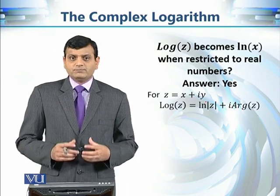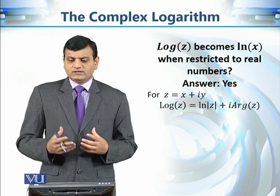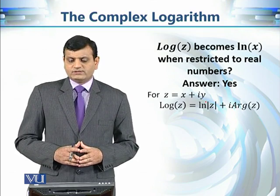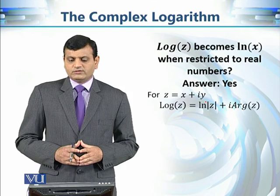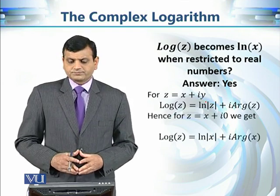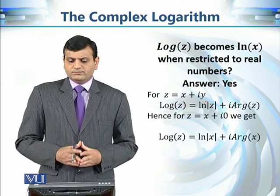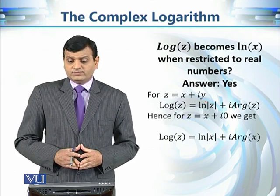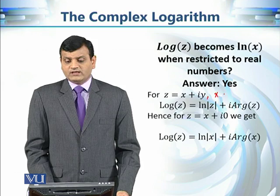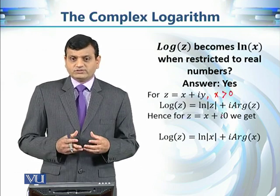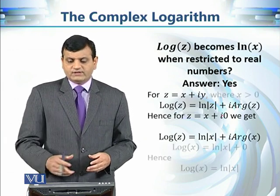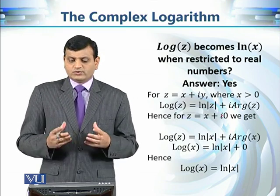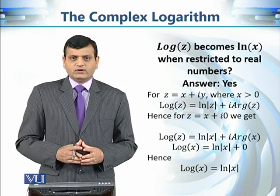The answer is yes — this criterion is satisfied. If we take z = x + i·0, where x is a positive real number, then the principal log equals ln|z| + i·Arg(z). Since x is positive, its principal argument is zero, so the principal log of x equals ln(x) + 0 = ln(x). When restricted to the positive real numbers, the principal log is exactly the natural log.